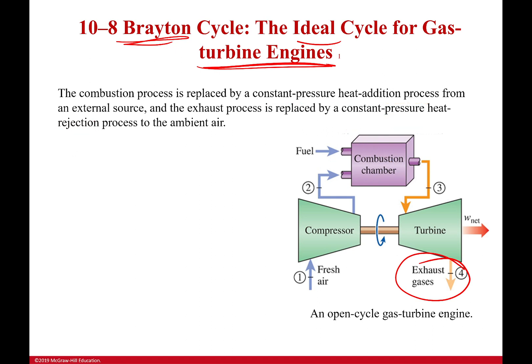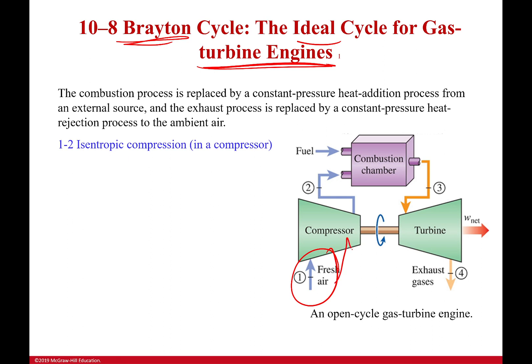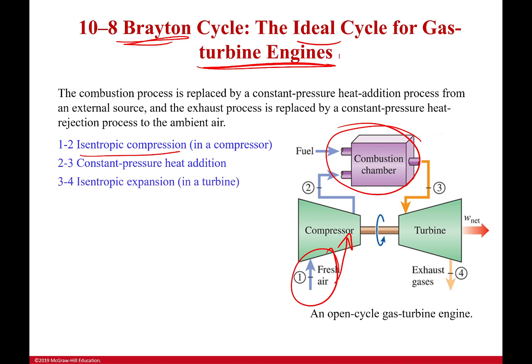Let's look at this turbine power cycle and see what's going on. First, we have fresh air going into the compressor. When we're idealizing it, the air never leaves — but in this open cycle, it does. The air gets compressed to high temperature — that's isentropic compression. That then goes into the combustion chamber where we have constant pressure heat addition, adding heat very quickly through combustion. Then we have isentropic expansion, and that's where the work is being produced.